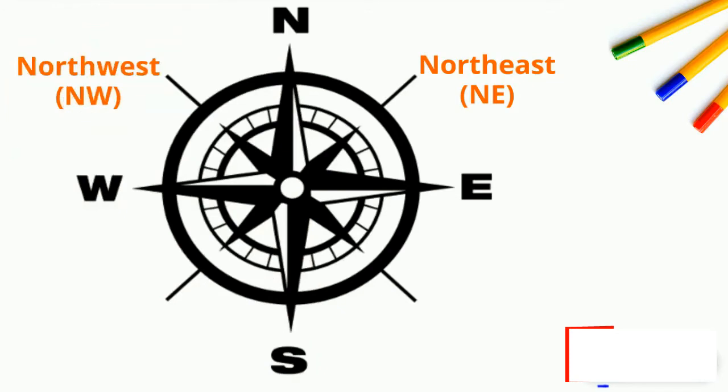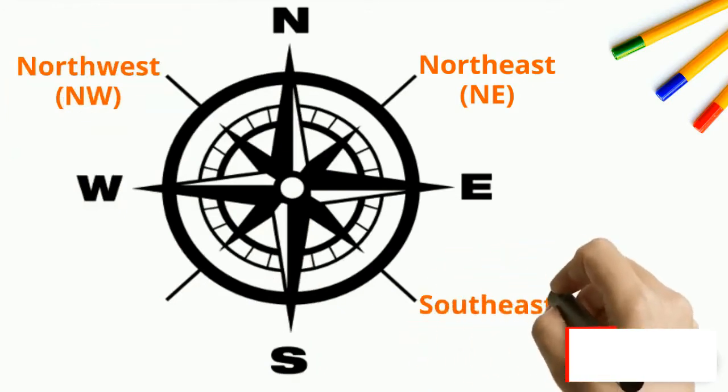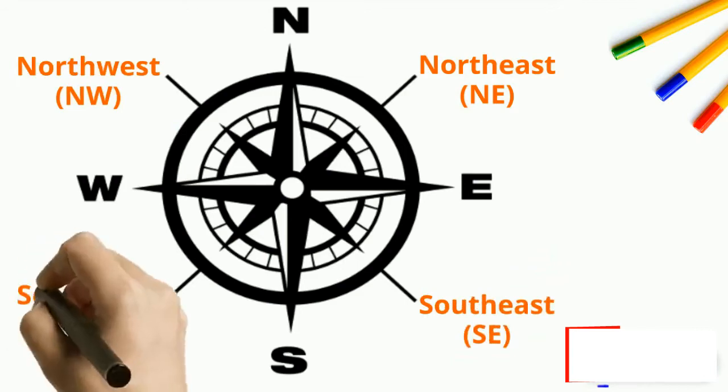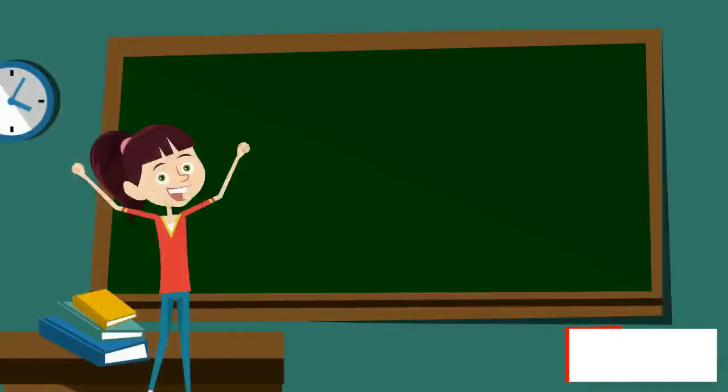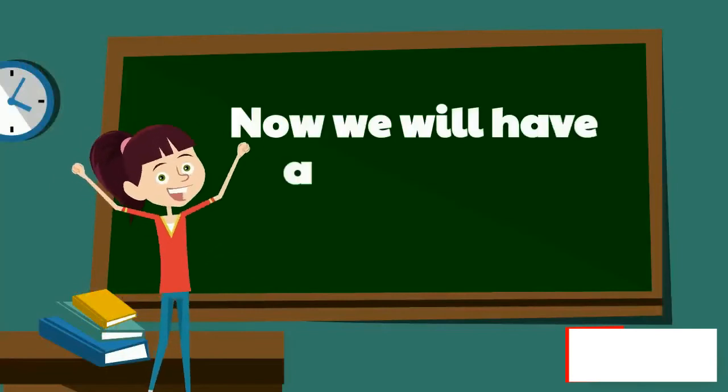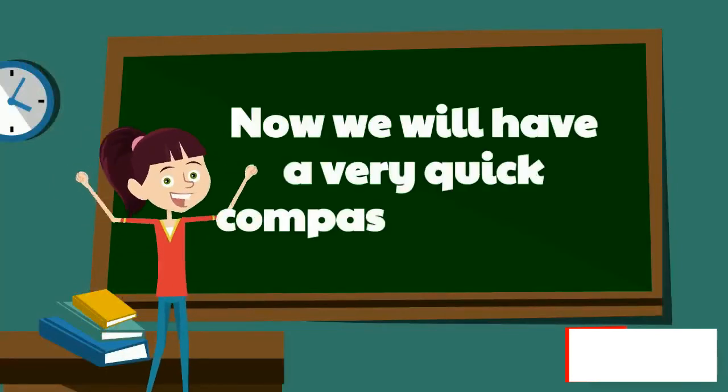The one that is between south and east is called southeast, and finally the one between south and west is called southwest. Now we will have a very quick compass rose quiz.